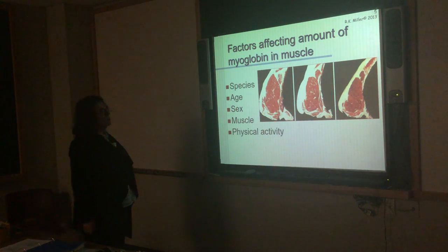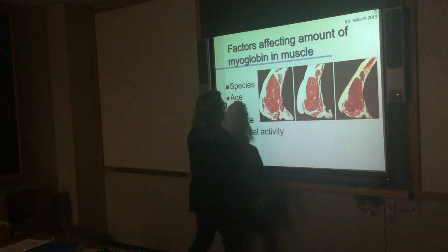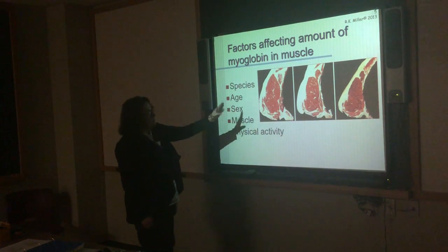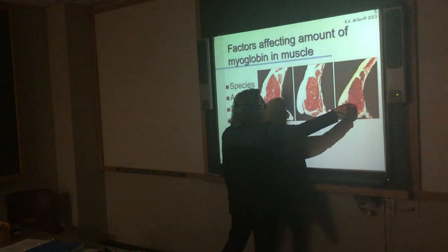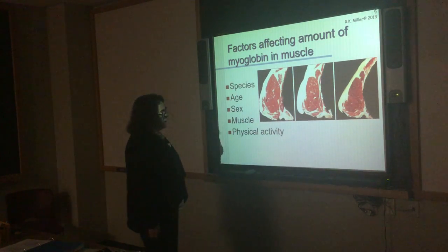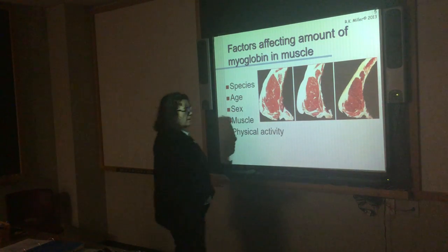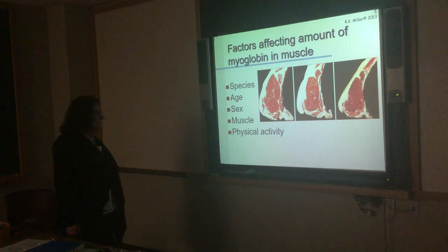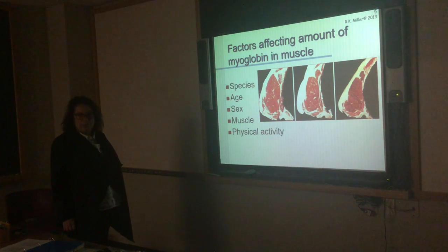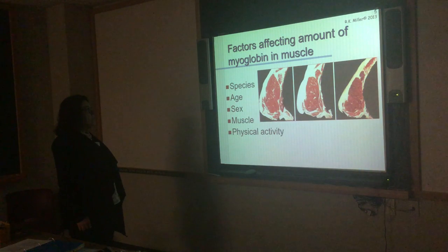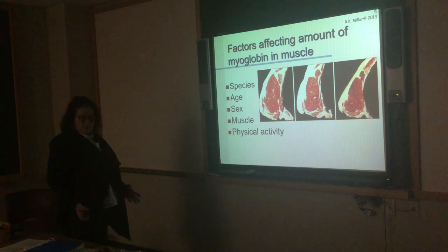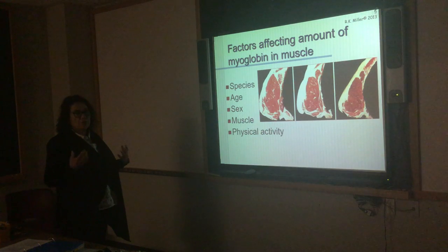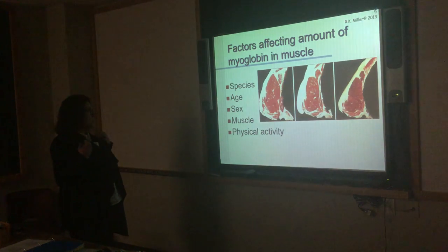The age of the animal affects how much myoglobin is present. Meat from young, medium, and old animals gets darker red as the animal gets older — the older animal has higher myoglobin content. Sex also matters: bulls have darker meat than heifers and steers because they need more oxygen in their muscle — they're ready to fight. They need to store more oxygen.